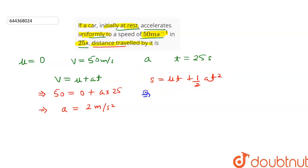This will give us s equals zero plus one by two times a is 2 times t is 25 squared. After simplifying we get s equals 625 meters. So the distance travelled by the car in 25 seconds is 625 meters.